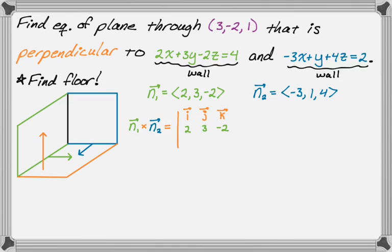And then the second row is just going to be n1, so 2, 3, negative 2. And the third row is negative 3, 1, 4.